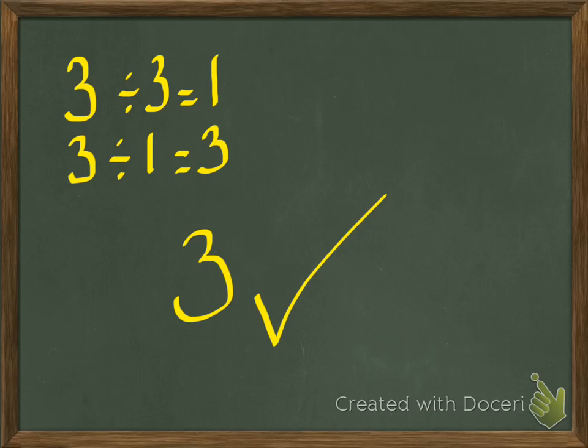Let's try 3. 3 divided by itself equals 1, and 3 divided by 1 equals 3. So 3 is a prime number.